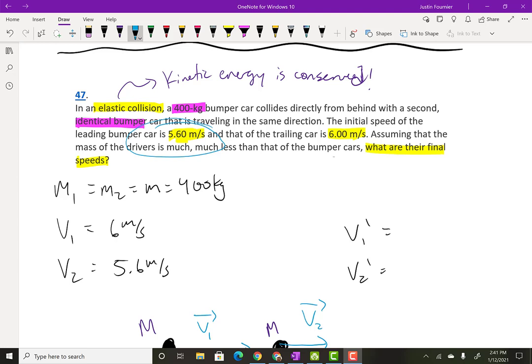So I'm going to solve problem 47 from homework 9g right here. And so basically it says that we have an elastic collision. So that basically tells me kinetic energy is conserved of a 400 kilogram bumper car collides directly from behind with a second identical bumper car.